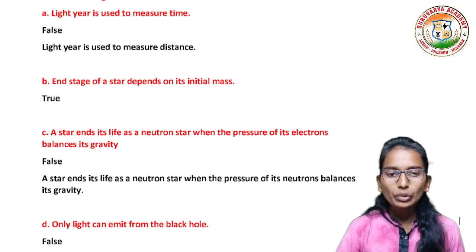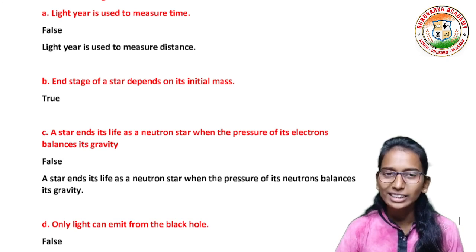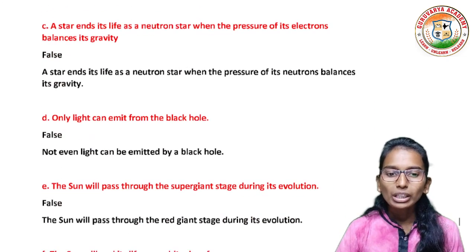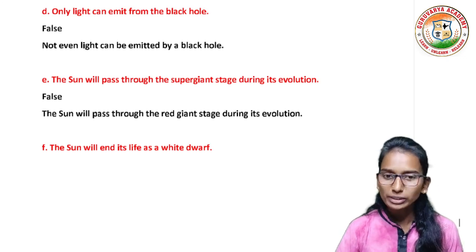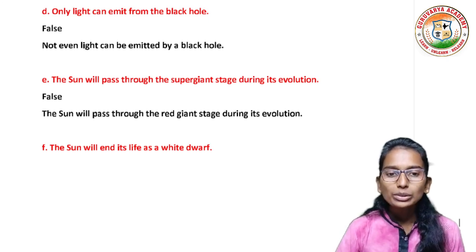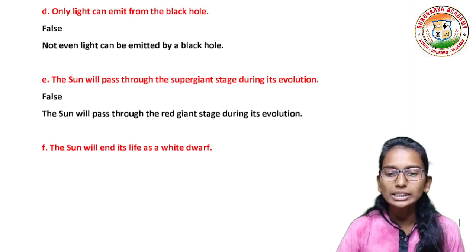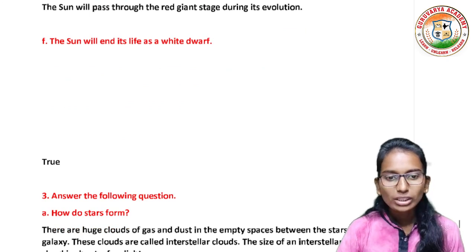A star ends its life as a neutron star when the pressure of its electrons balances its gravity — this is a wrong statement. The right statement is: a star ends its life as a neutron star when the pressure of its neutrons balances its gravity. Next: only light can be emitted from a black hole — this statement is also false. True statement: not even light can be emitted by a black hole. The sun will pass through the super giant stage during its evolution — this is also false, because the sun will pass through the red giant stage during its evolution.